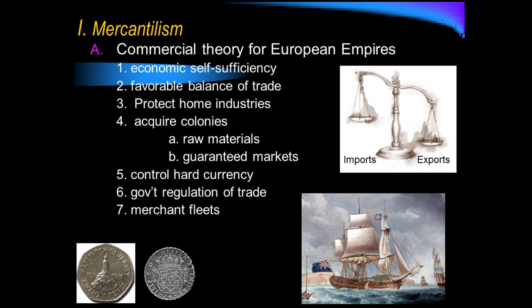You want to acquire colonies to provide things that the mother country does not have. England had used up most of their natural resources. They had become an industrial country and used up their timber and most of their land. So they need colonies that will provide the things England needs, because what England gets from her colonies is not considered imports — it's an extension of England.